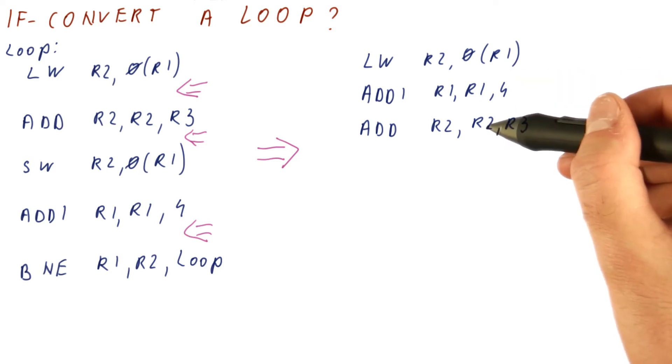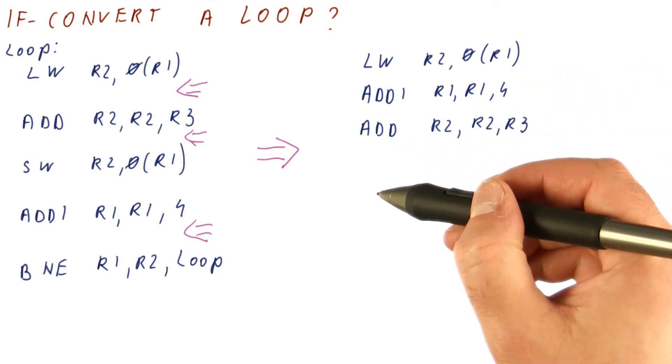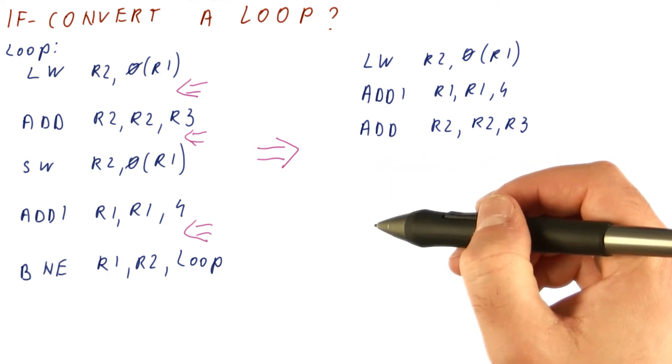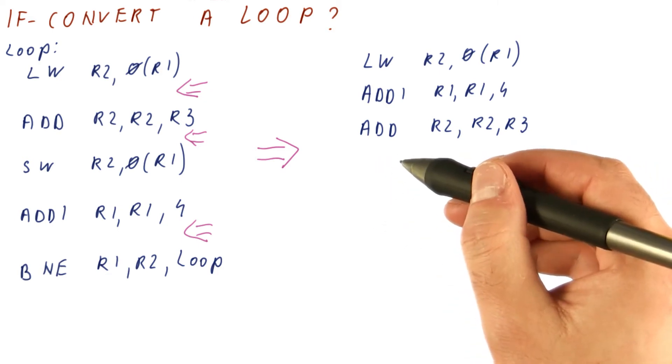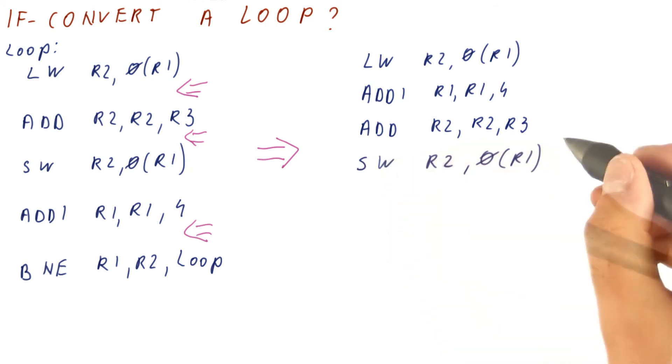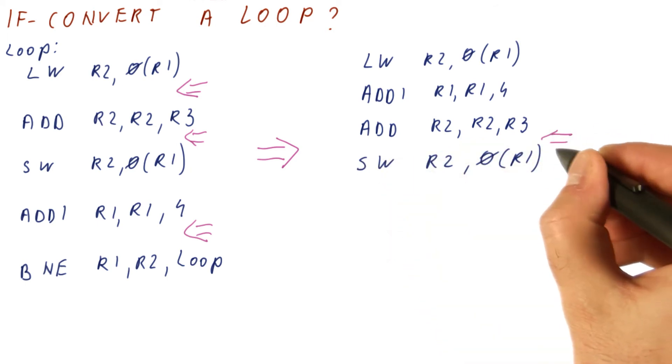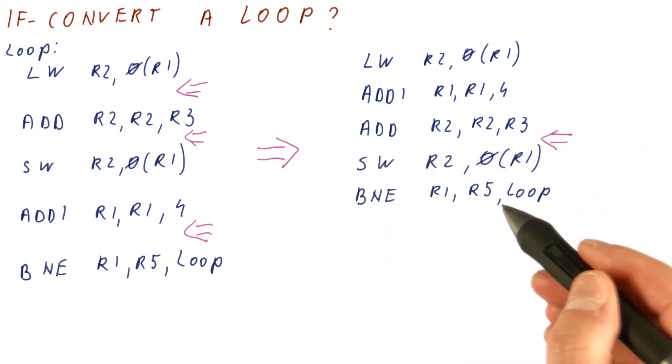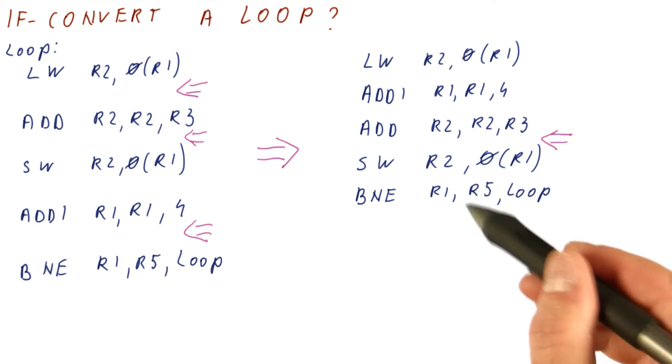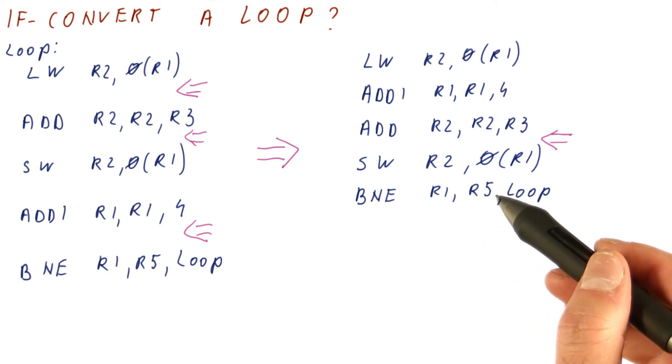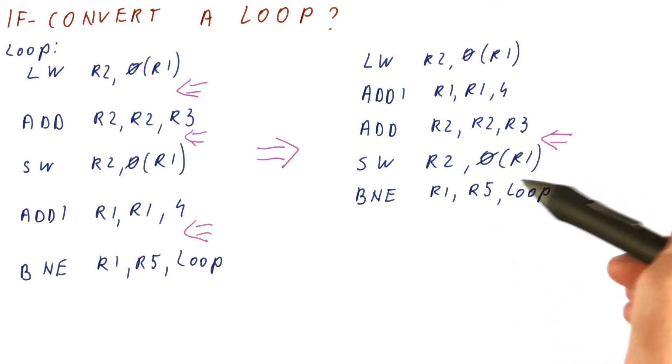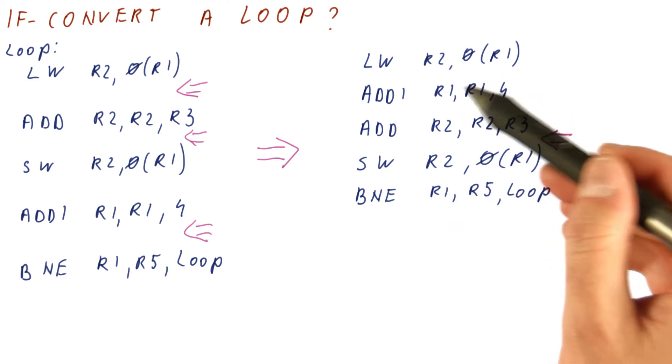However, after this add, the only things that are left to do in this iteration of the loop are the store and the branch. We cannot do the branch before the store, so the store has to happen here. And thus, we haven't eliminated this stall cycle here. And then the branch can check R1 for whether it reached the final value here, without a stall, because R1 has been manipulated here.